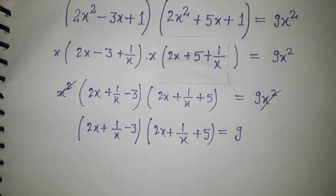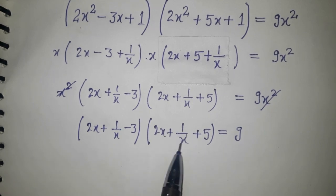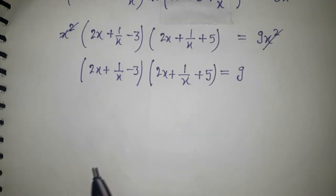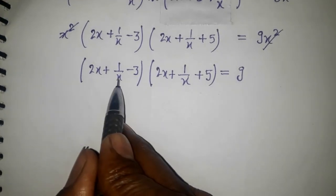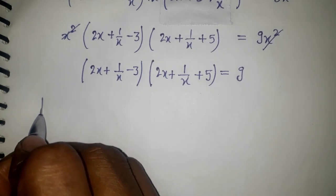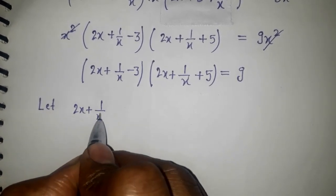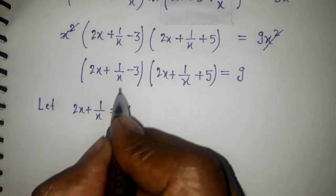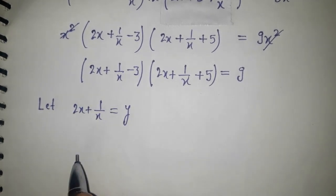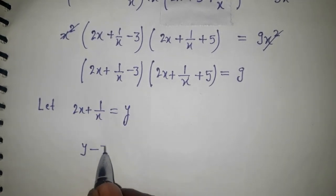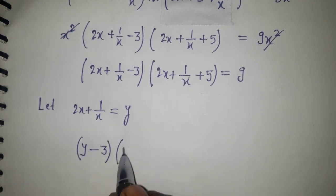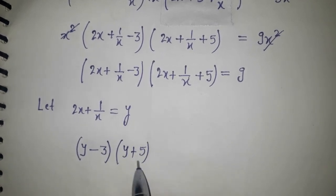Now it is clear that 2x + 1/x appears in both brackets. So we can take this as one variable. Let y = 2x + 1/x. Then the equation can be written as (y - 3)(y + 5) = 9.